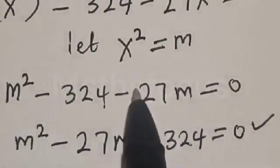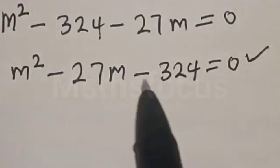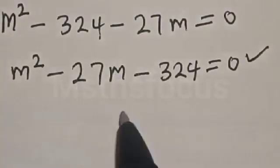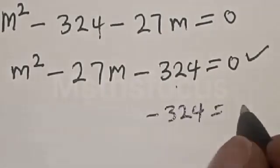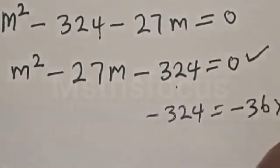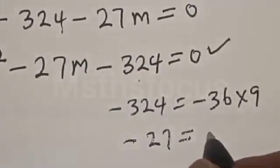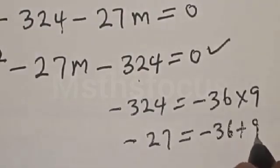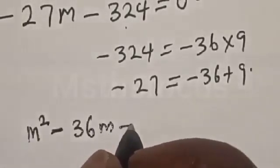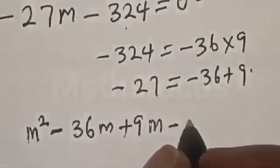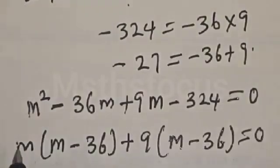In this case, I'm going to use the factorization method. We look for two numbers whose product gives minus 324 and whose sum gives minus 27. Minus 324 equals minus 36 multiplied by 9, and minus 27 equals minus 36 plus 9. So we get m squared minus 36m plus 9m minus 324 is equal to 0.